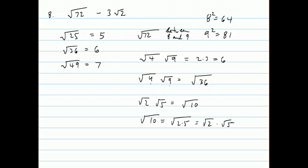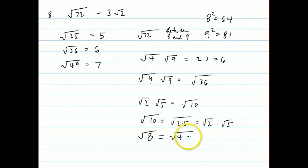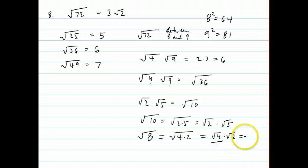Now, there is a situation where you would want to do this, and it would be something like the square root of 8. The square root of 8 you could break up into — well, 8 can be broken up into 4 times 2. So the square root of 8 can be turned into the square root of 4 times the square root of 2, but the square root of 4, since 4 is a perfect square, is 2. So we say the square root of 8 is 2 times the square root of 2, and that's called a simplified radical.